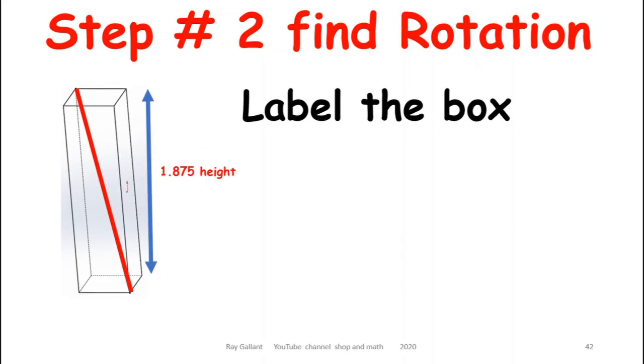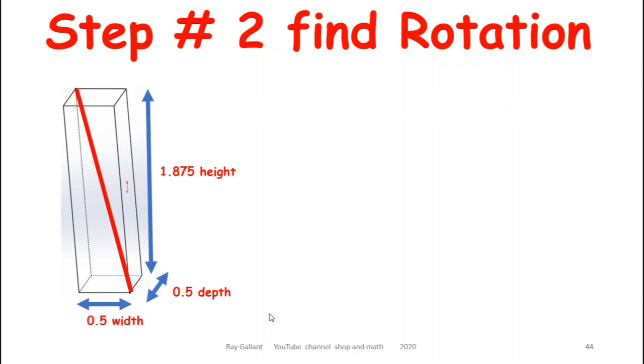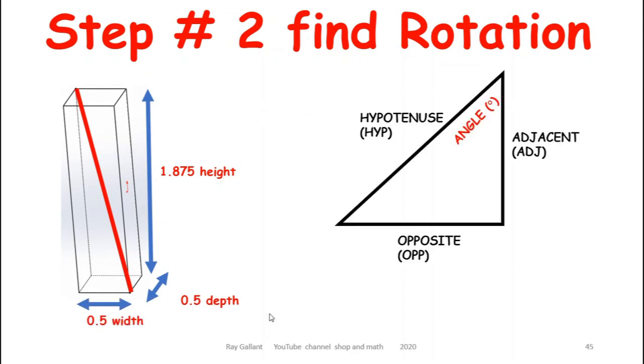Okay, let's label our box. So we have our height, we have our depth, and we have our width. So if this is the angle we want to find, this is our depth, and this is our width here. So we want to calculate this tiny little angle right inside here.